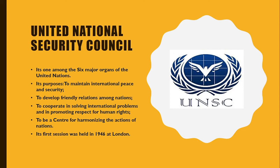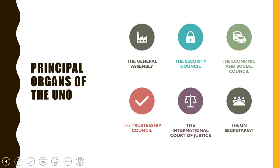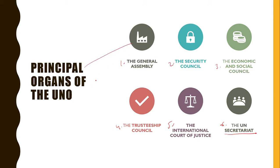The first topic is the United Nations Security Council, UNSC. It is one among the six major organs of the United Nations. The six principal organs of the UNO are: the General Assembly, the Security Council, the Economic and Social Council, the Trusteeship Council, the ICJ (International Court of Justice), and the Secretariat of the United Nations.